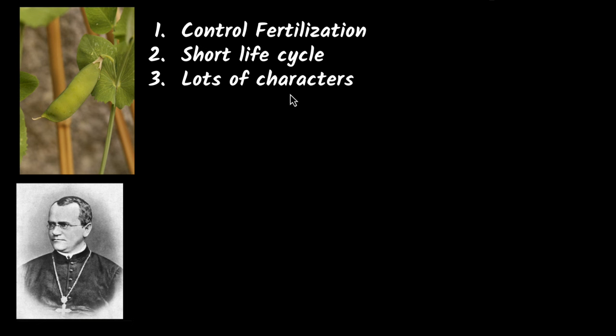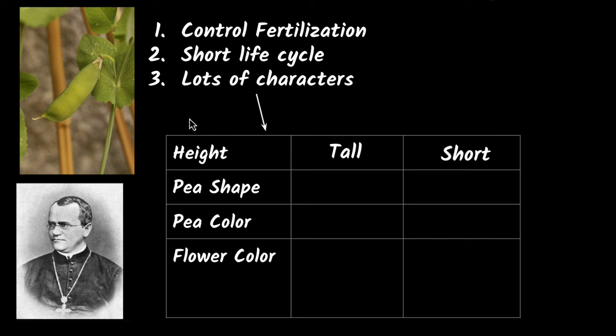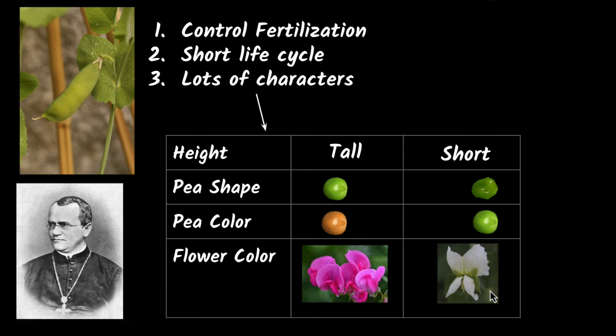And finally, you have a lot of characters to experiment with. For example, you can experiment with the height. Pea plants come with tall versions and short ones. They also have round seeds and wrinkled seeds. What about the pea color? Peas can be yellow or they can be green. The flower itself can be white or purple.